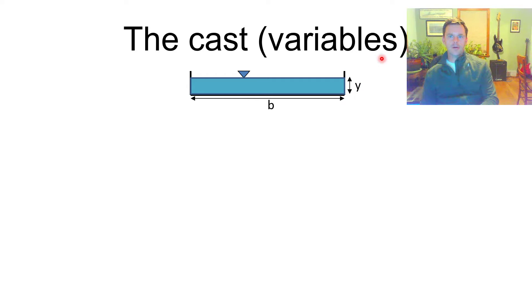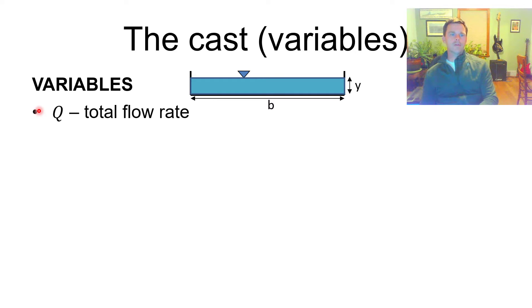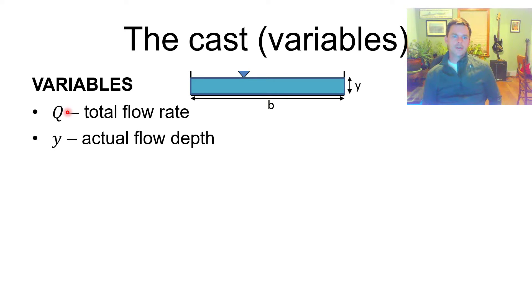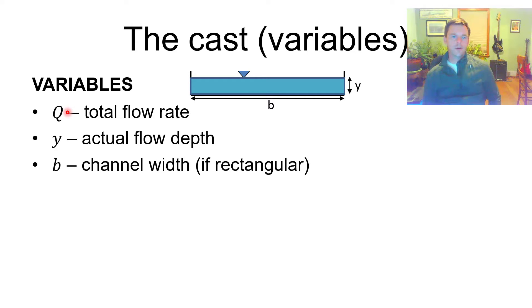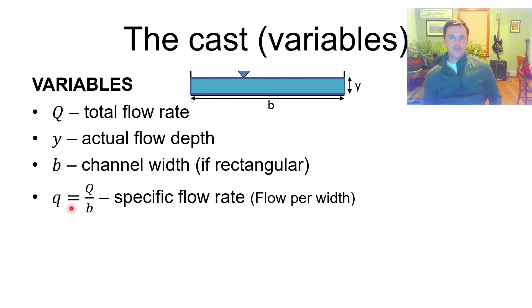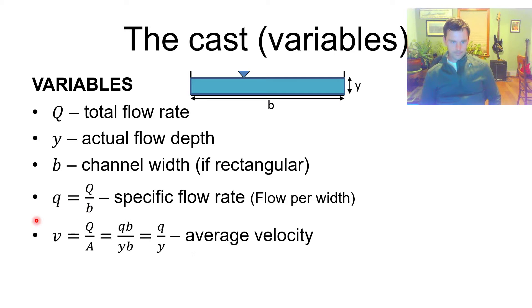The depth is really the primary variable in open channel flow. The total flow rate is denoted by uppercase Q — that's going to be meters cubed per second or feet cubed per second. The flow depth is called Y, and the channel width B. One of the new variables is called the specific flow rate: that is just the total flow rate divided by the width, so the units are flow rate per unit width. The average velocity is Q over A. If you're using lowercase q, it ends up being q over y because B cancels out in the numerator and denominator.